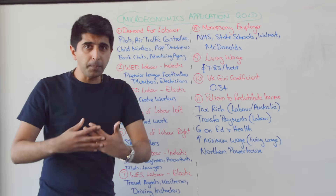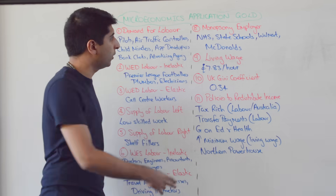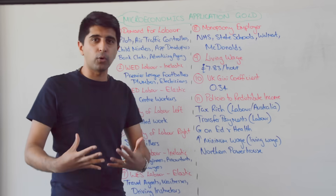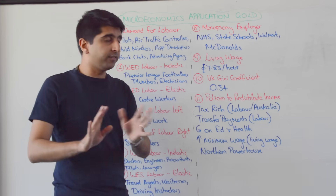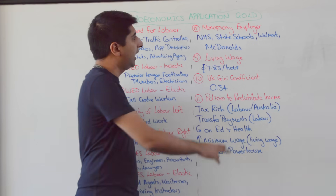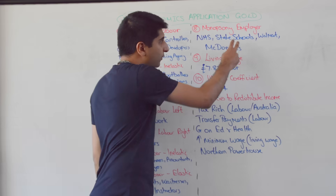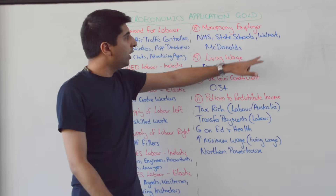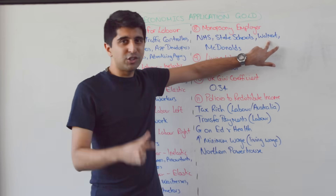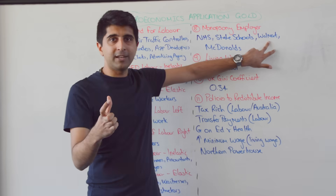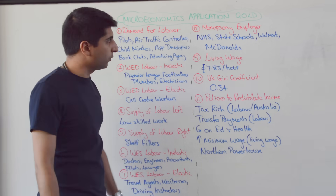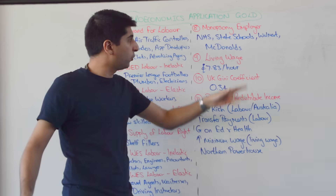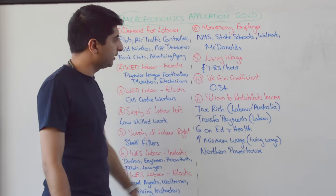Good examples of monopsony employment: the NHS, one of the biggest employers in the world. State schools — the monopsony employer being the UK government. Walmart, the dominant monopsony employer in the world. And McDonald's — massive employers globally.